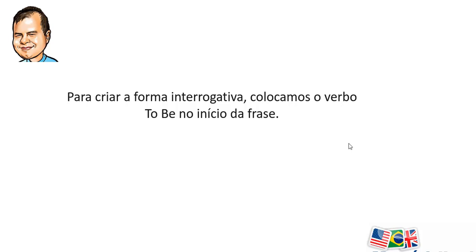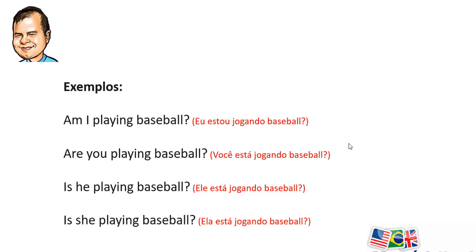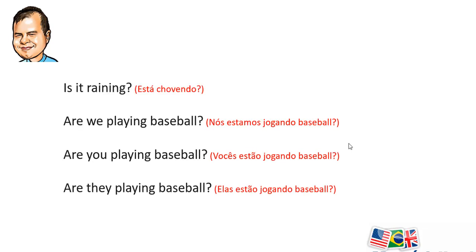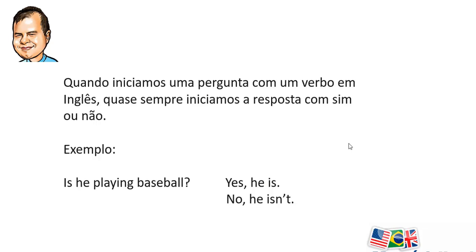To change it into a question, all we have to do is put the verb 'to be' at the beginning of the sentence. Examples: Am I playing baseball? Are you playing baseball? Is he playing baseball? Is she playing baseball? Is it raining? Are we playing baseball? Are you playing baseball? Are they playing baseball? Now, when we start the question with the verb, in English most of the time we start the answer with yes or no. For example: 'Is he playing baseball?' — 'Yes, he is,' or 'No, he isn't.'